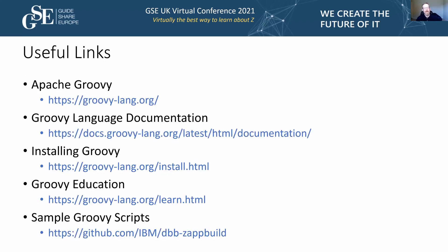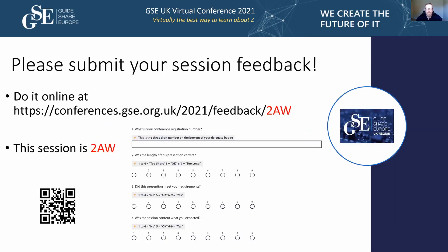Definitely go download the PDF. There are links to the Apache Groovy website, language documentation, installation guide, educational resources, and sample Groovy scripts on GitHub — specifically the DBB sample application for building a ZOS application, which has many example Groovy scripts you can look at. That's the end of the main presentation.